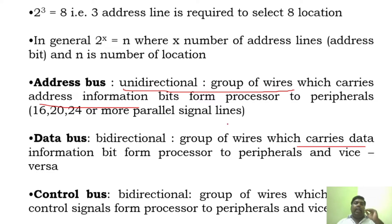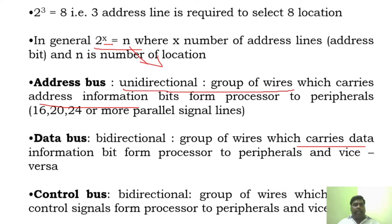In order to represent the address line, it can be expressed as x to the power of n, where n is the number of locations and x is the number of address lines. So when you know the number of address lines, you can determine how many memory locations can be accessed.